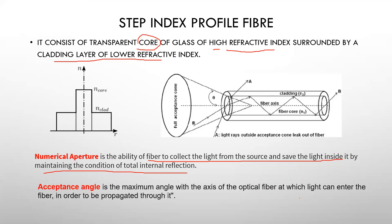The acceptance angle is the maximum angle with the axis of the optical fiber at which light can enter into the fiber in order to propagate through it. The acceptance angle can be around 45 degrees or 60 degrees depending on the fiber.